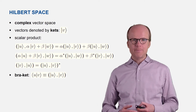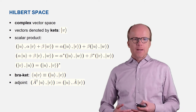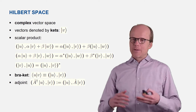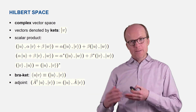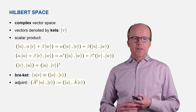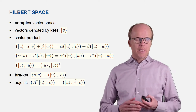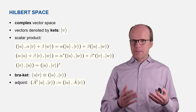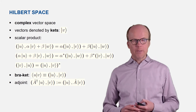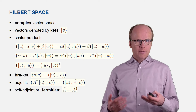You can have operators acting on vectors in Hilbert space, and there are a few concepts I would like to stress. When you have an operator acting on the second argument of a scalar product — on the right-hand side — you can move the operator to the first argument of the scalar product. The operator then becomes its adjoint, denoted with a dagger — that's called the A-dagger operator.